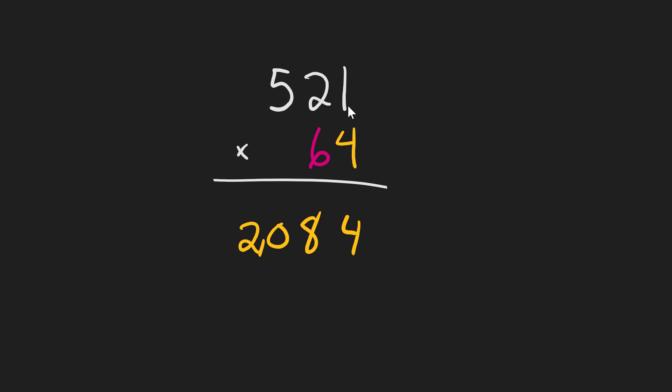Next we multiply 521 by 60 in a second row. Now 60 is the same as 6 with a zero at the end of it. So we can just write a zero here in the ones place so that we can just multiply 521 by 6. Let's do that.